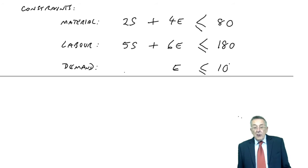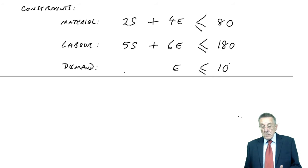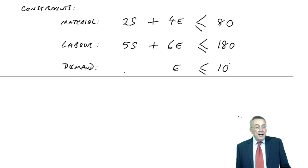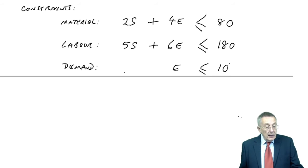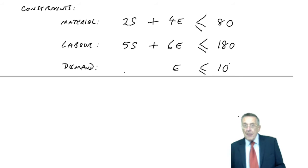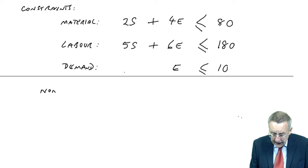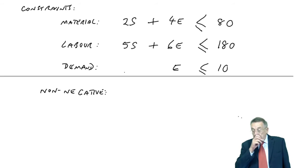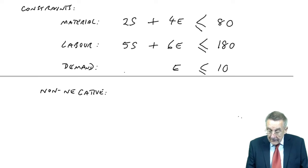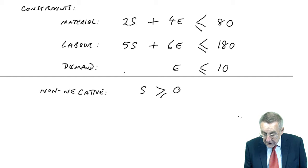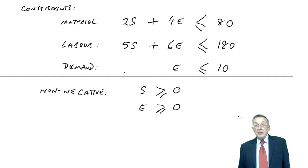The point is, as you'll see later, we're going to solve this algebraically using S and E. And, in theory, any numbers could come out. But, obviously, from a practical point of view, whatever answer we get for S and E, we may end up producing 0, standard or 0, executive. We don't know yet. But we can't produce a negative number. That would be silly. And so, we've got what we call the non-negative constraints. Perhaps an obvious one, but an important one, if you were asked to list the constraints. Both S, it can't be negative, S must be greater than or equal to 0. Similarly, E, whatever answer we end up with, it must be greater than or equal to 0.